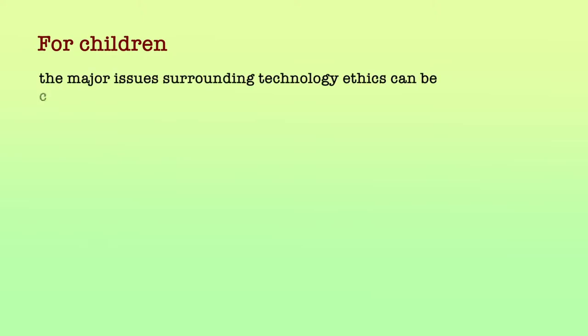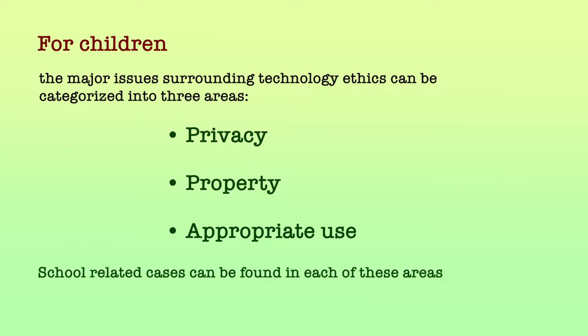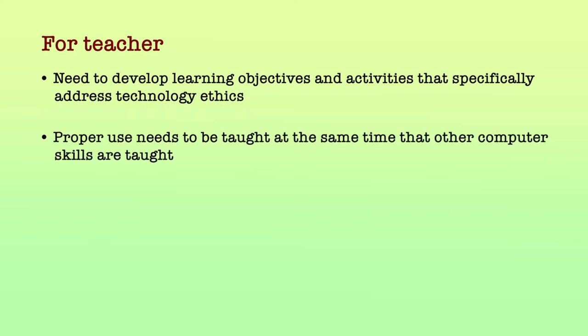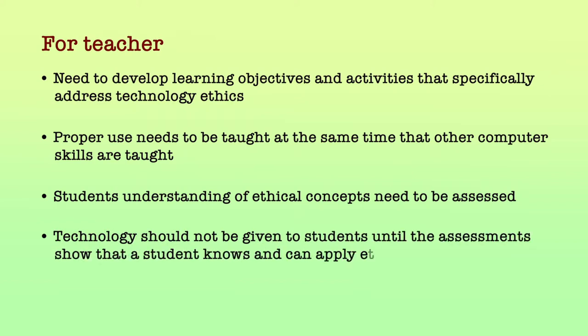Teachers, students, and parents need to know and understand these ethical codes. For children, the major issues surrounding technology ethics can be categorized into three areas: privacy, property, and appropriate use. Teachers need to develop learning objectives and activities that specifically address technology ethics. Proper use needs to be taught at the same time that other computer skills are taught. Students' understanding of ethical concepts needs to be assessed. Technology use privileges, especially those involving online use, should not be given to students until assessment shows that a student knows and can apply ethical standards and institutional policies.